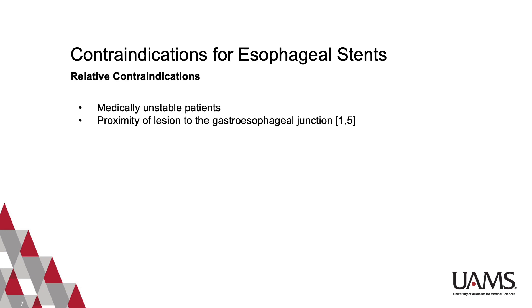Relative contraindications to stent placement include hemodynamically unstable patients, as well as those with unresolved coagulopathy. Proximity of the lesion to the gastroesophageal junction is also a relative contraindication due to the risk of stent migration or stent placement in the stomach.